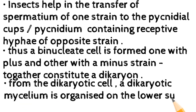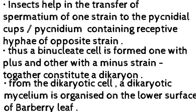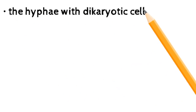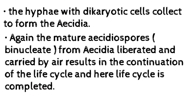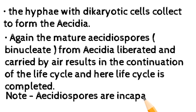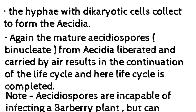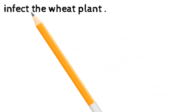From the dikaryotic cell, a dikaryotic mycelium is organized on the lower surface of the barberry leaf. The hyphae with dikaryotic cells collect to form the aecia. Again the mature aeciospores — binucleate — from the aecia are liberated and carried by air, resulting in the continuation of the life cycle; and here the life cycle is completed. Note: aeciospores are incapable of infecting a barberry plant but can infect the wheat plant.